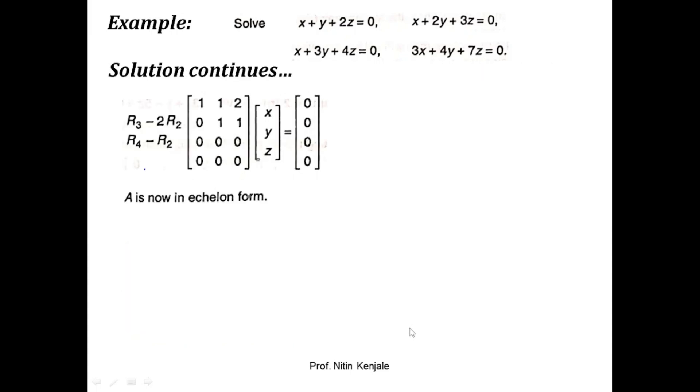The number of non-zero rows in matrix A is two, so rank of A equals 2. Since the number of unknowns is three, rank of A is less than the number of unknowns. Therefore, this system will have non-trivial solutions — infinitely many solutions — obtained by assigning n minus r, that is three minus two equals one, variable a random value.